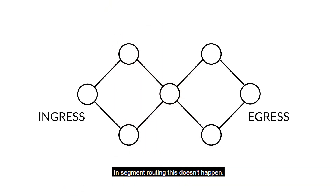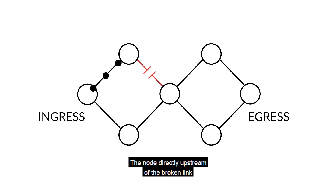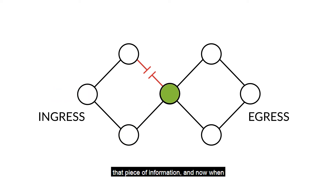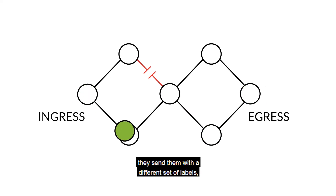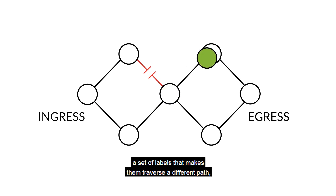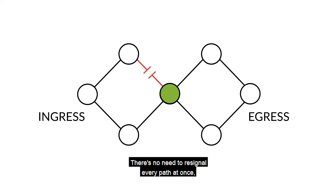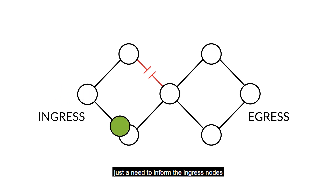In segment routing, this doesn't happen. The node directly upstream of the broken link signals that a link is broken. All of the path ingress nodes receive that piece of information, and when they send packets into the network, they send them with a different set of labels — a set of labels that makes them traverse a different path, one that circumvents the broken link. There's no need to re-signal every path at once, just a need to inform the ingress nodes that something has changed.